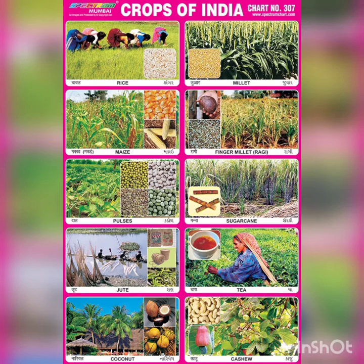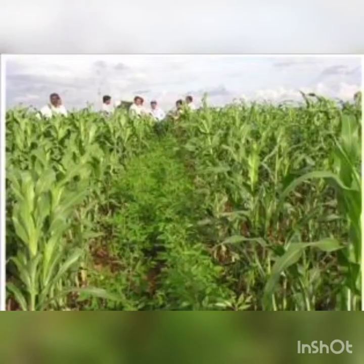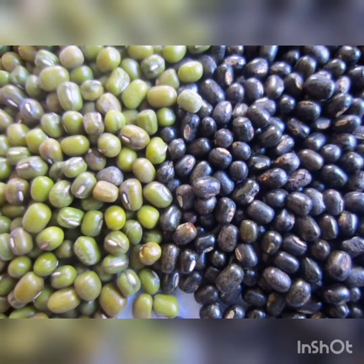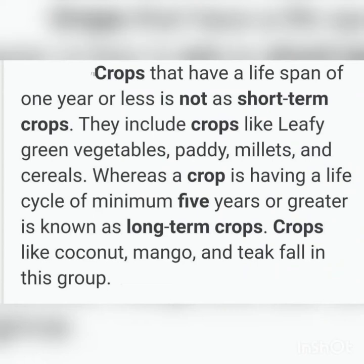Some crops like jowar and red gram take a minimum of 180 days for harvesting. Such crops which take a long term or 180 days for harvesting are called long-term crops. Some crops like green gram and black gram take only 100 days for harvesting. Such crops which take only a shorter period of time for harvesting are called short-term crops.